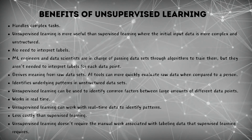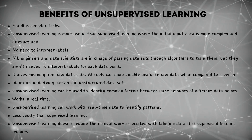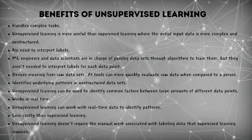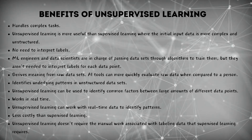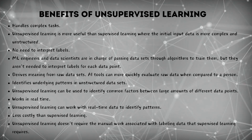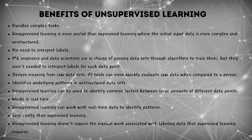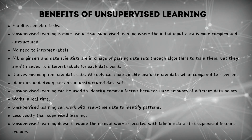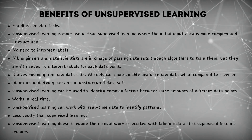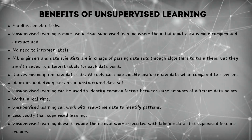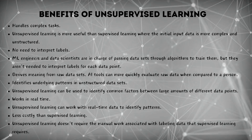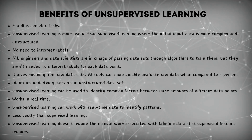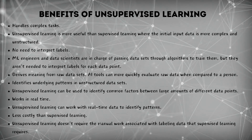Benefits of unsupervised learning: it handles complex tasks — unsupervised learning is more useful than supervised learning where the initial input data is more complex and unstructured. No need to interpret labels: machine learning engineers and data scientists pass datasets through algorithms without needing to label each data point. It derives meaning from raw datasets, as AI tools can more quickly evaluate raw data than a person. It identifies underlying patterns in unstructured datasets and can find common factors across large amounts of different data points. It works in real-time and is less costly than supervised learning, since it does not require the manual work of labeling data.